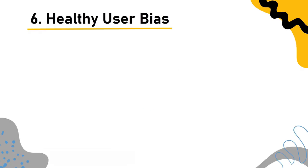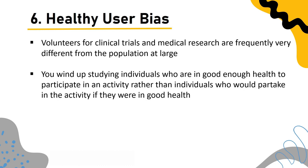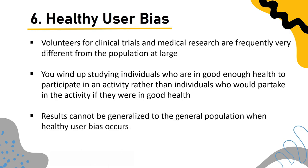Healthy user bias: In medicine, this kind of sampling bias is typical. Healthy user bias refers to the fact that volunteers for clinical trials and medical research are frequently very different from the population at large — they tend to have better health and are more active. As a result, you end up studying individuals who are in good enough health to participate rather than those who would partake only if they were in good health. Results cannot be generalized to the general population. To counter this, encourage diverse persons from the research population to participate.